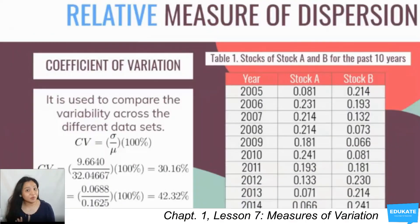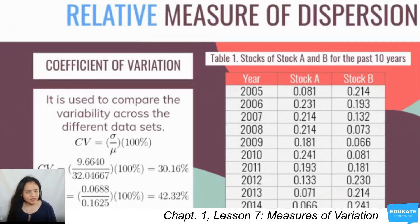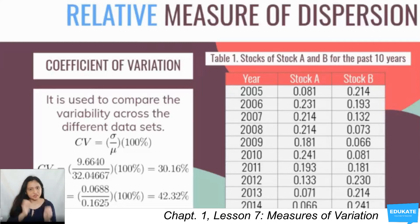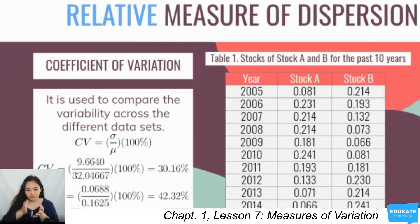Moving to relative measures of dispersion, the coefficient of variation (CV) is computed as your standard deviation divided by your mean, multiplied by 100 percent. Stock A has a CV of 30.16 percent while Stock B has a CV of 42.32 percent. From this we can say that the returns of Stock A have more variation than those of Stock B. The CV is used to compare the variability of two different data sets.